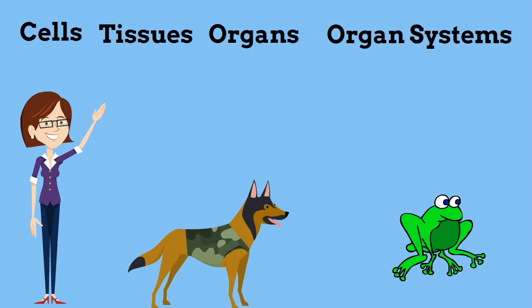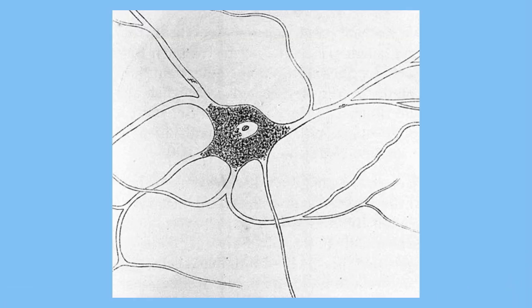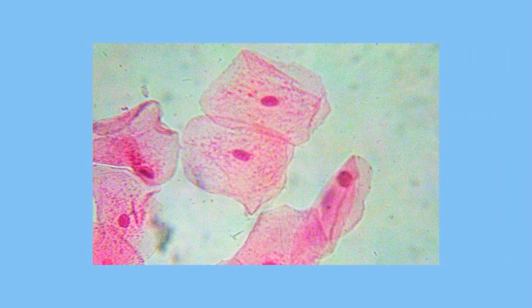Multicellular organisms like mammals or amphibians have different types of cells, like nerve cells or skin cells. When these similar cells work together, they create tissues.